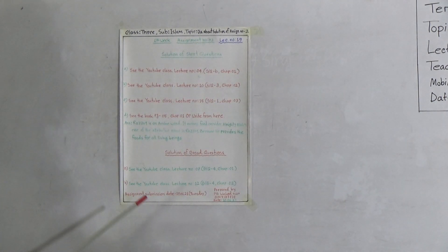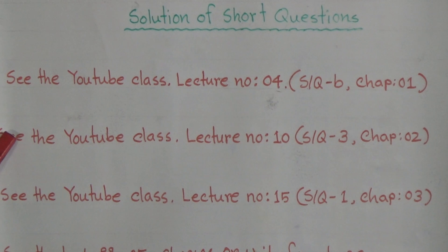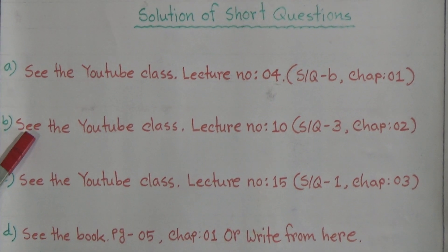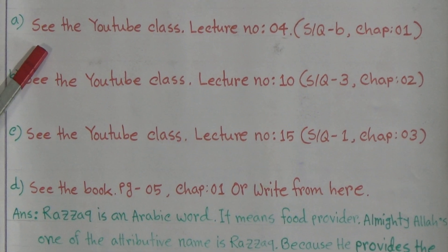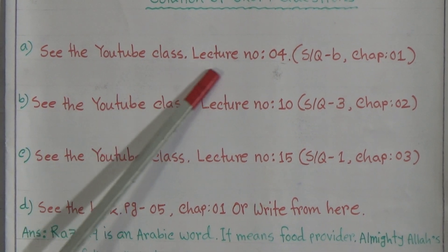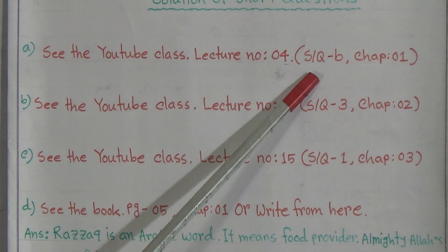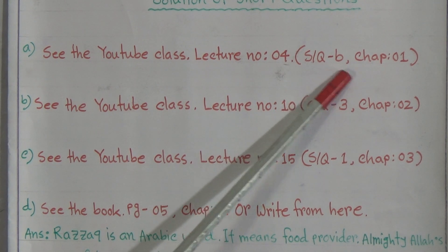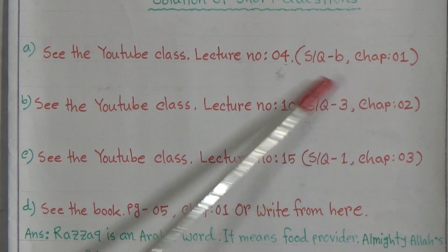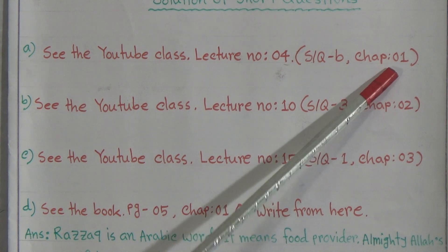What is the question and where will you get the answer? Your first short question is: write the name of 5 creations of Allah. My beloved students, you will get this answer in your YouTube class, lecture number 4. Short question number B is the answer related to this question, and it is from chapter number 1.